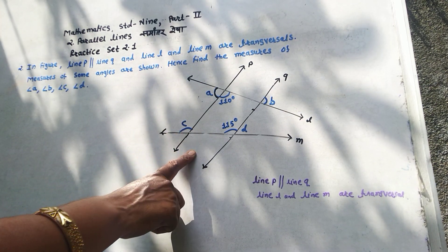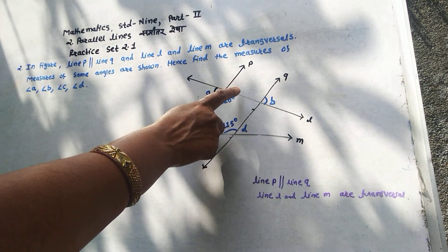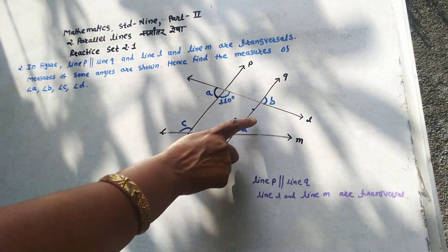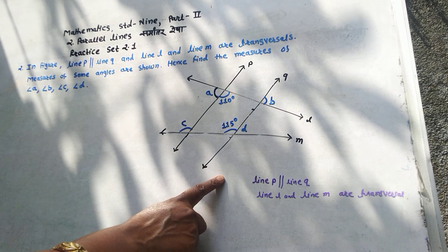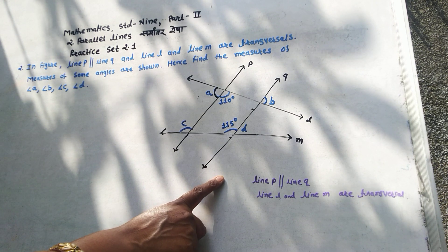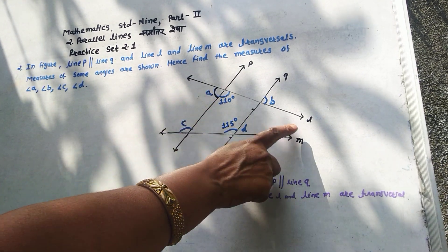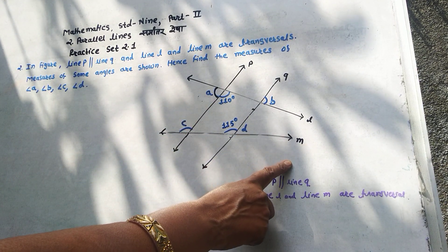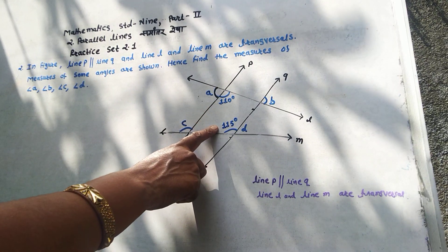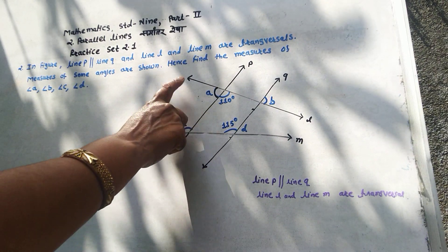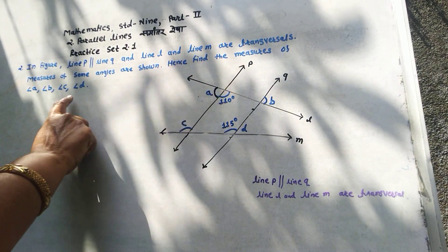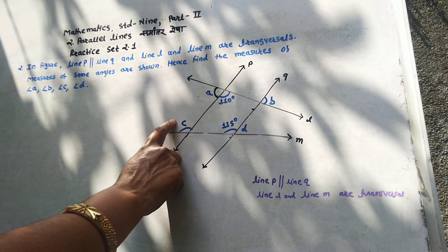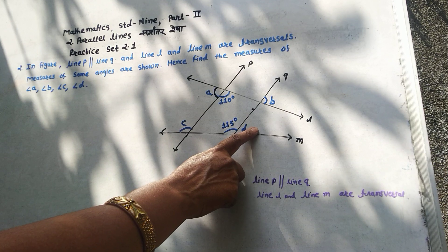In the figure, line P and line Q are parallel to each other, and line L and line M are transversals. Measures of some angles are given. Find the measures of angle A, angle B, angle C, and angle D.